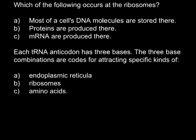Which of the following are cues at the ribosomes? Answer A: most of the cell's DNA molecules are stored there. This is not correct because most DNA molecules are stored in the nucleus, and some of them are also present in the mitochondria. Mitochondria are of course much smaller than the nucleus, so I drew them out of proportion. So we can cross out answer A — it is not correct.